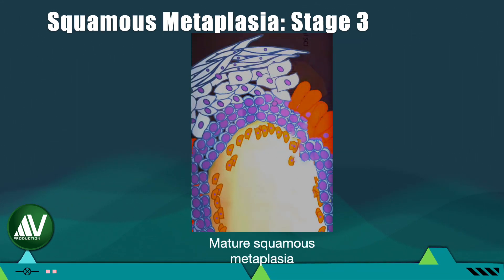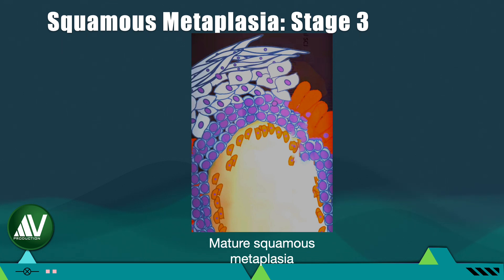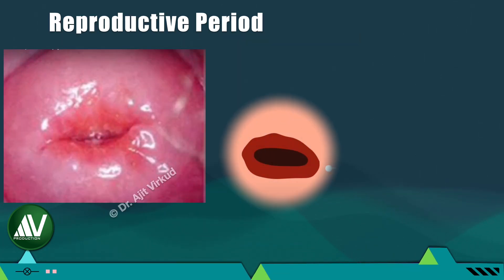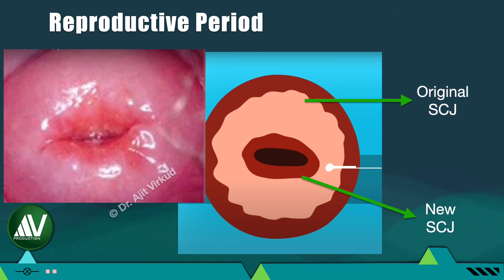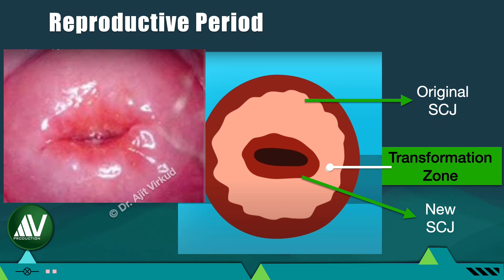Subsequently, even the superficial squamous cells are formed, giving rise to the stage called mature squamous metaplasia. Remember, all the denuded areas are not in the same stage of metaplasia — some areas may be in the first stage, others in the second, and some in the third. At the completion of all three stages, a new squamo-columnar junction develops towards the internal os. The area between the original and new squamo-columnar junction is called the transformation zone.